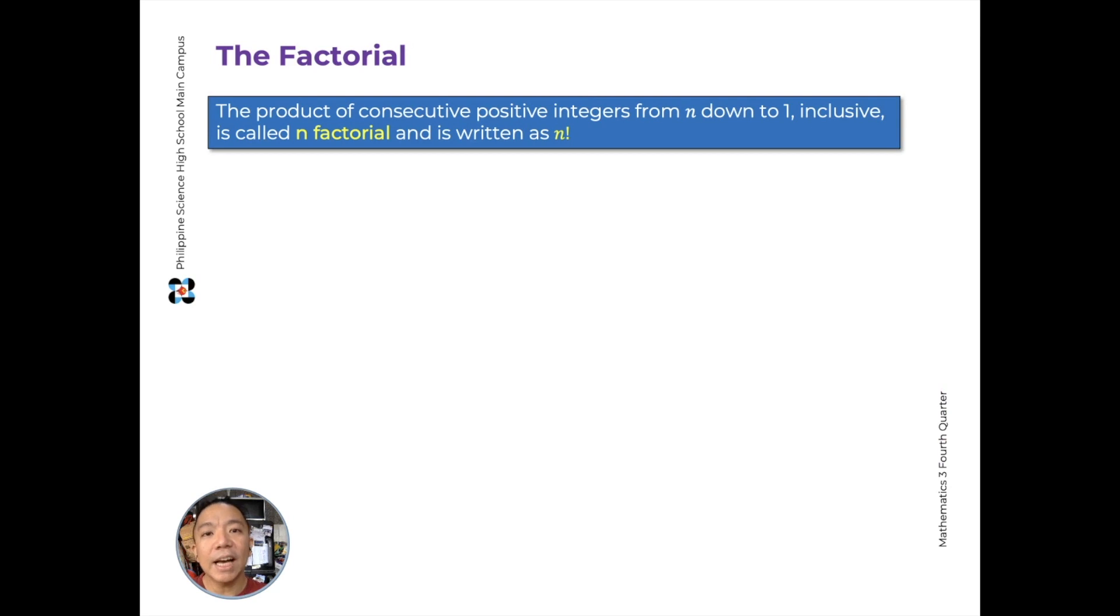Before we proceed to counting how many permutations and combinations we can make from a set of objects, we'll define factorial first because we'll use it often in this lesson. So factorial is the product of consecutive integers from n, which should be a positive integer, down to 1, inclusive, meaning including n and including 1.